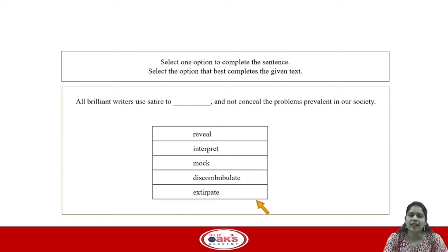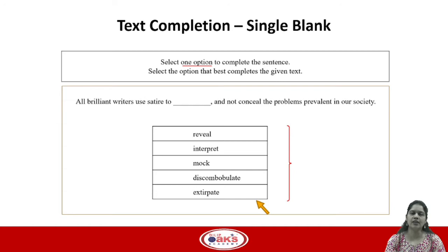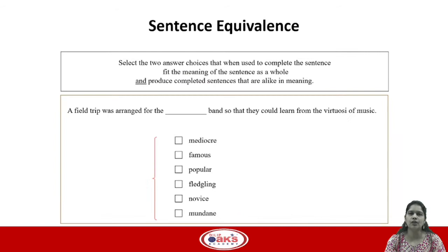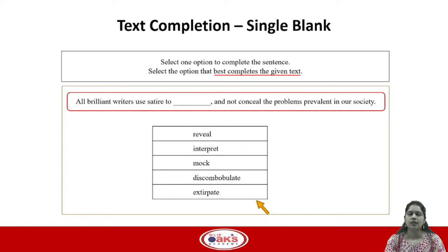Now let's look at the next question type: text completion single blank. With text completion single blank you have to select one option that completes the sentence given, and they provide five options to choose from. Unlike sentence equivalence, where you had six options and checkboxes and had to select two answer choices, in a text completion single blank you have to select only one answer choice that best completes the given text.